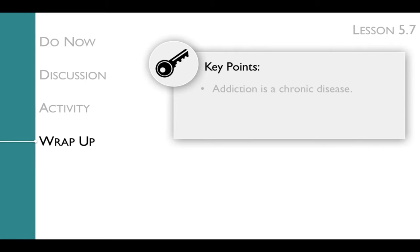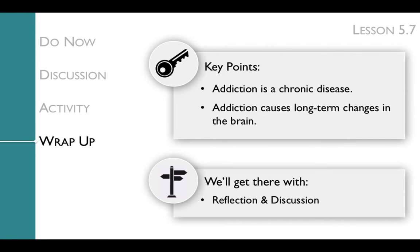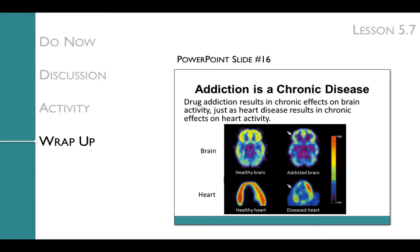The key points of the wrap-up are that addiction is a chronic disease and that addiction causes long-term changes in the brain. We'll get there with a reflection and discussion. During the wrap-up, the class will focus on the fact that addiction results in chronic effects on brain activity, just as heart disease results in chronic effects on heart activity, and thus addiction should be considered a chronic disease.